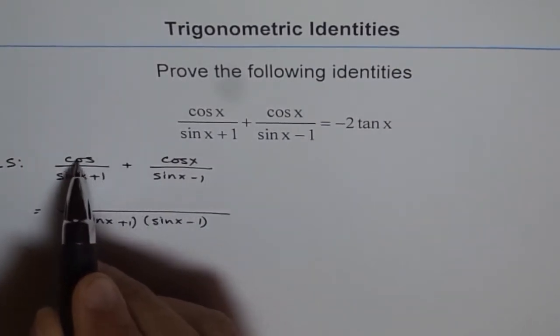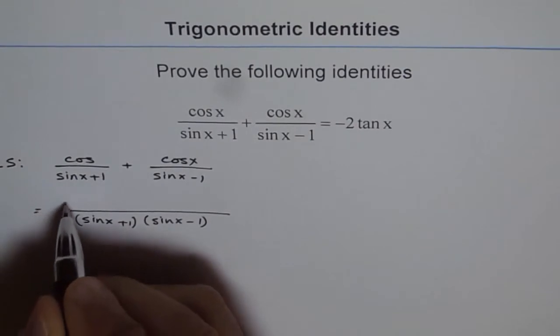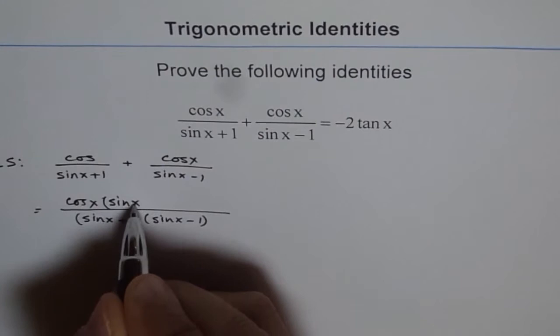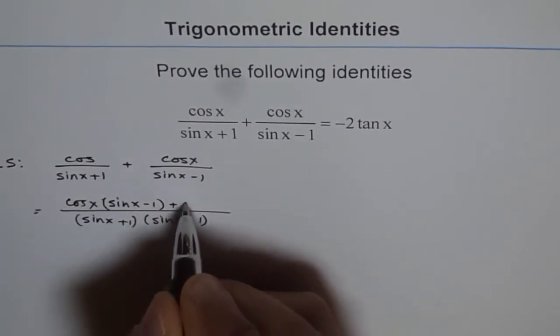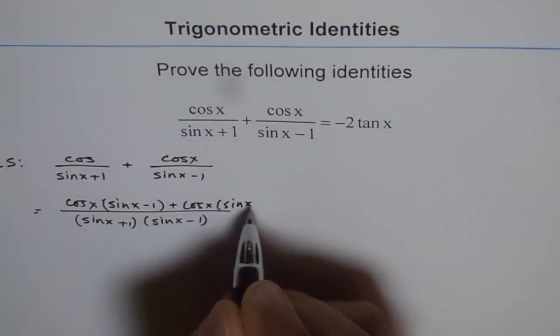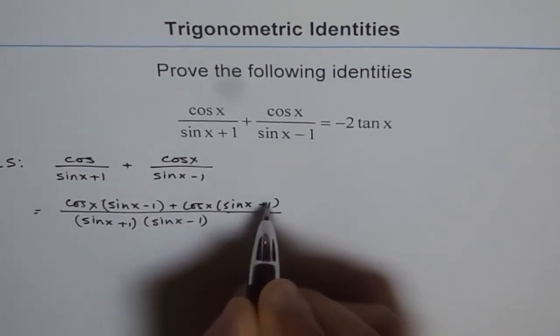Then this gets multiplied with sin x minus 1. We have cos x times sin x minus 1, plus cos x times sin x plus 1. So that's what we get in the numerator.